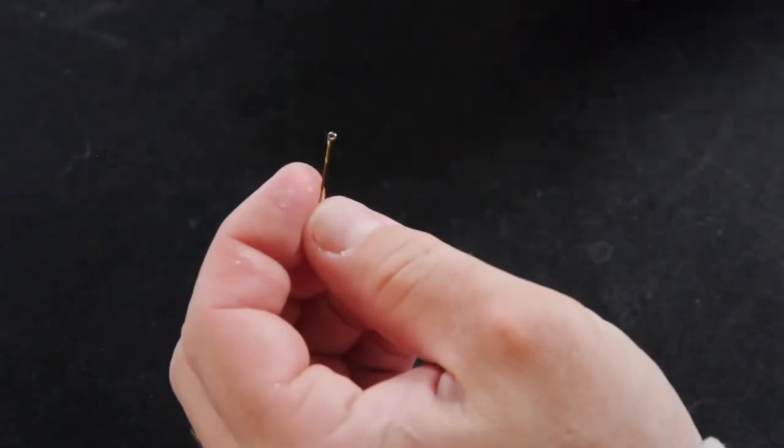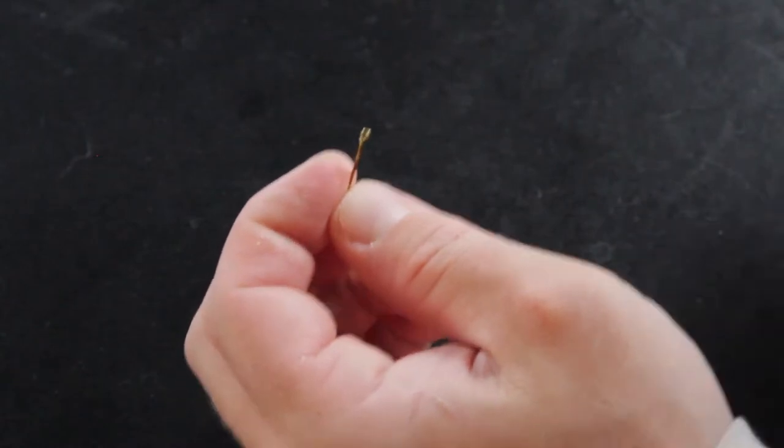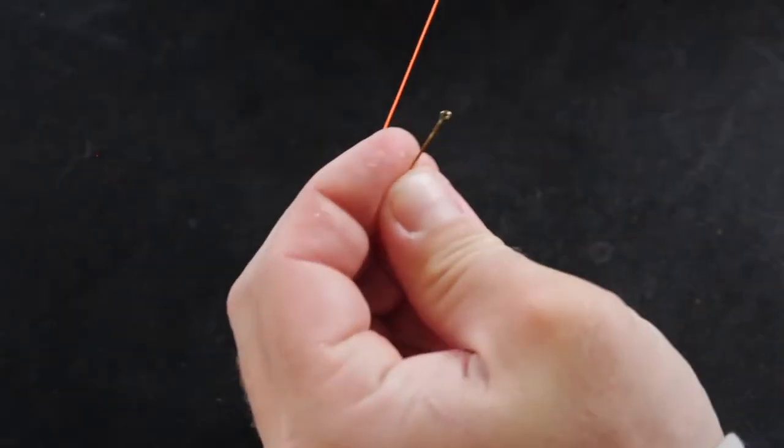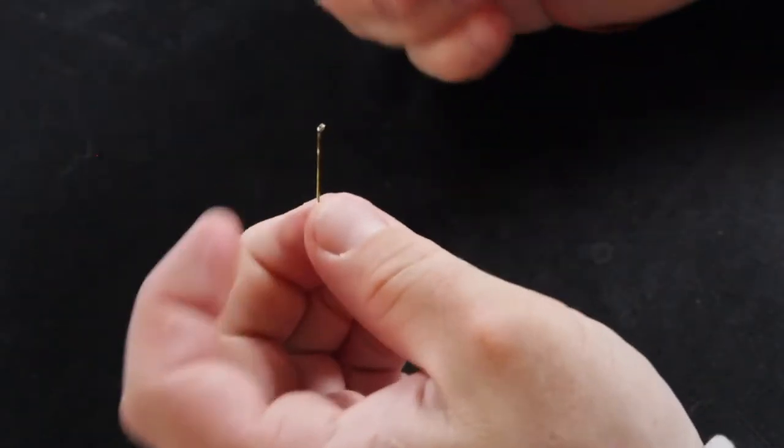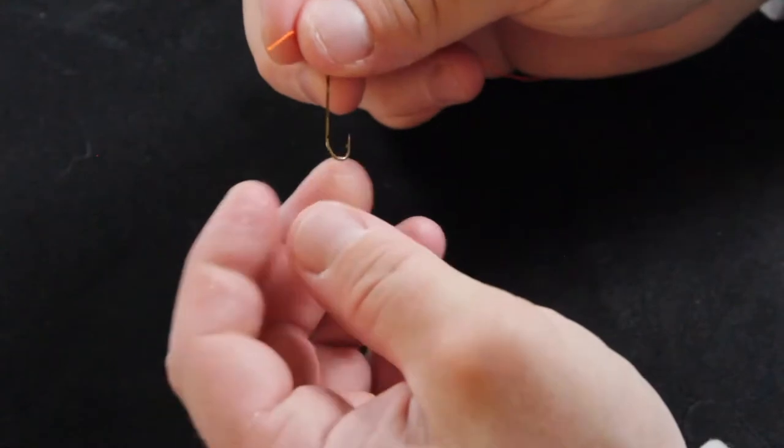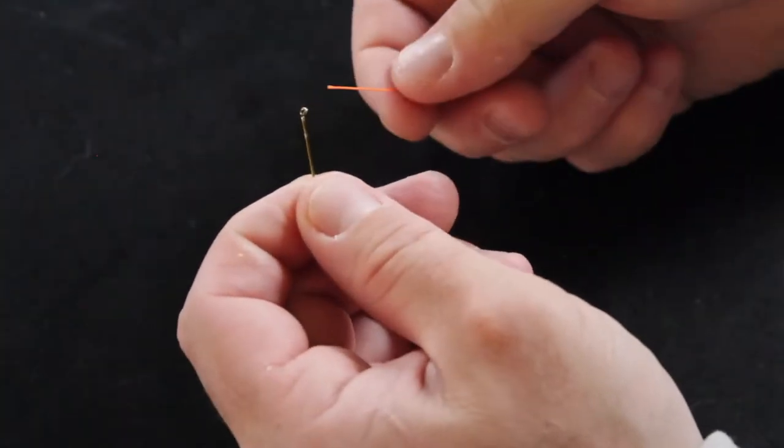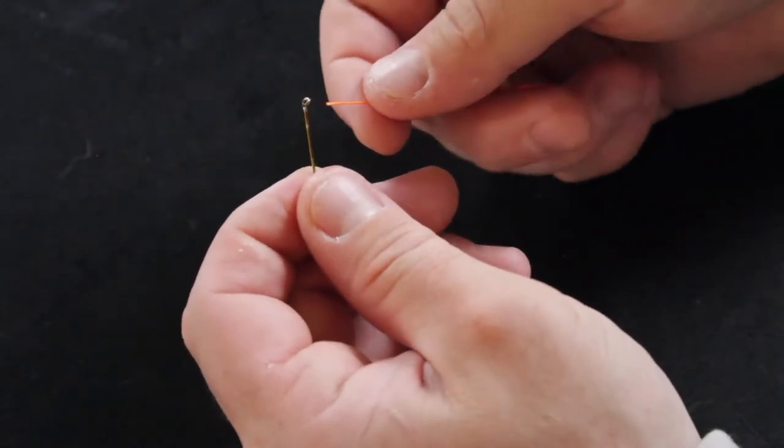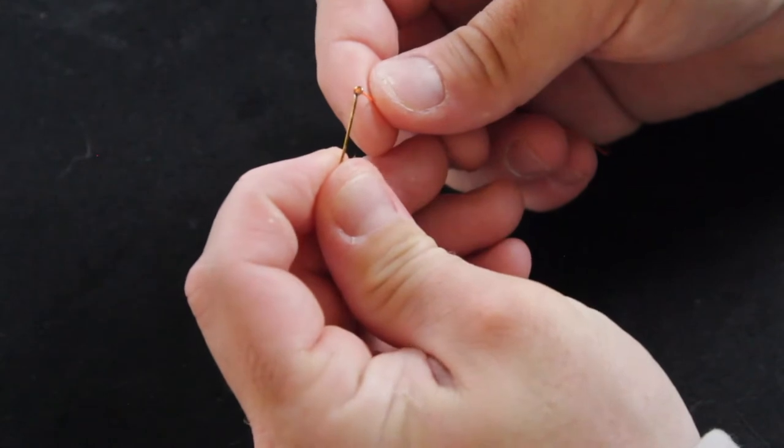Okay, so for the clinch knot, I'm going to use this backing here in orange and we're going to come through the hook through the shank side upwards. I don't ever go down. It seems to be that I get better hook sets this way. And so we're going to follow this through the eyelet.